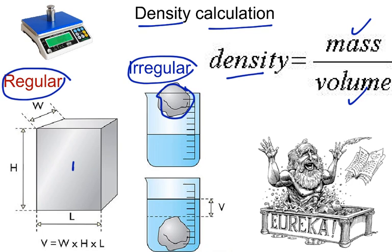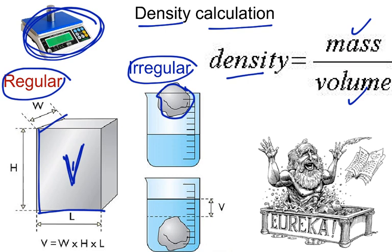In terms of the regular object, for example, this cube, you would take the length times the height times the width. That will give you the volume. You would need some type of scale to get the mass, and you would use this formula. Mass over volume will give you density.